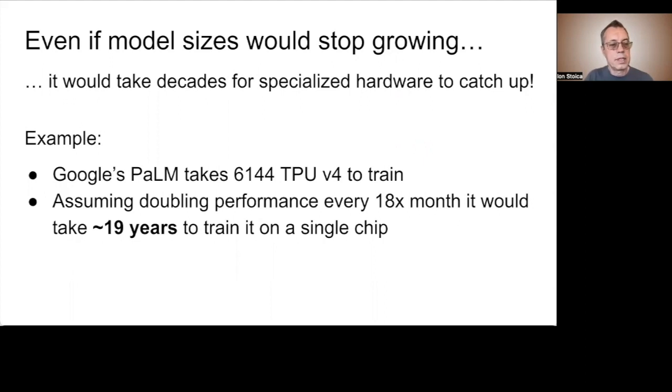This is not the largest model, but it still requires 6,000 of the latest TPUs to train. Assuming the performance of these processors continue to double every 18 months, it will take almost 19 years to be able to train the same model in roughly the same time on a single processor.